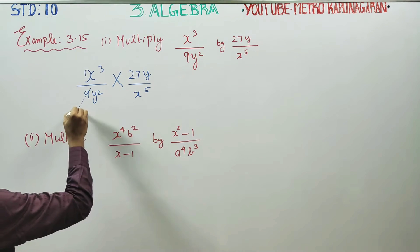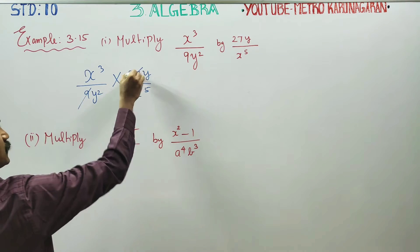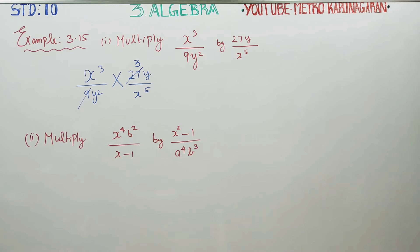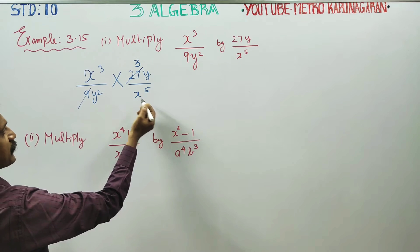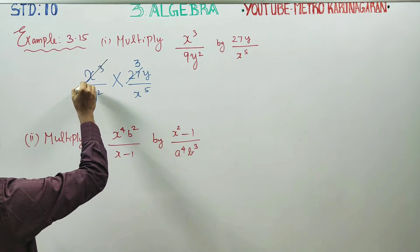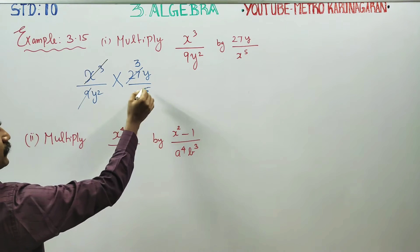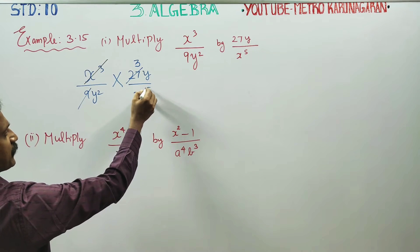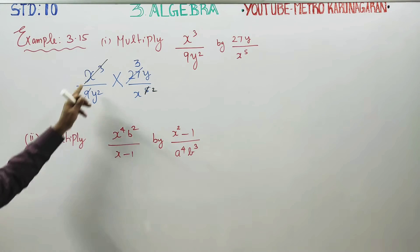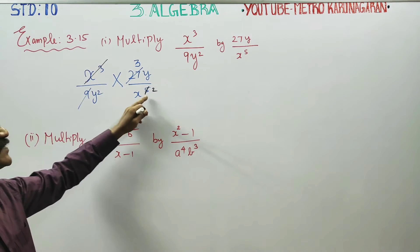Now for the numbers: 9 and 27 — 27 divided by 9 gives 3, so a factor of 3 cancels out. Next, looking at x: we have x power 3 and x power 5. When we cancel, we subtract powers: 5 minus 3 gives x power 2 remaining in the denominator.